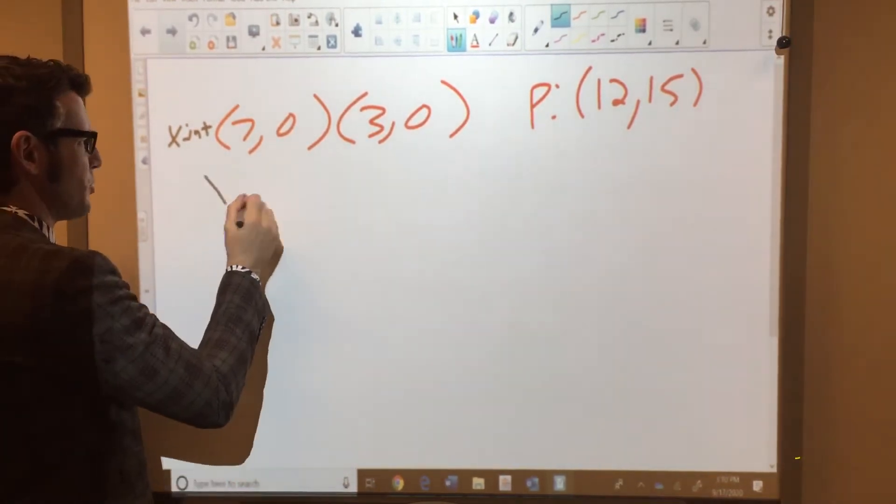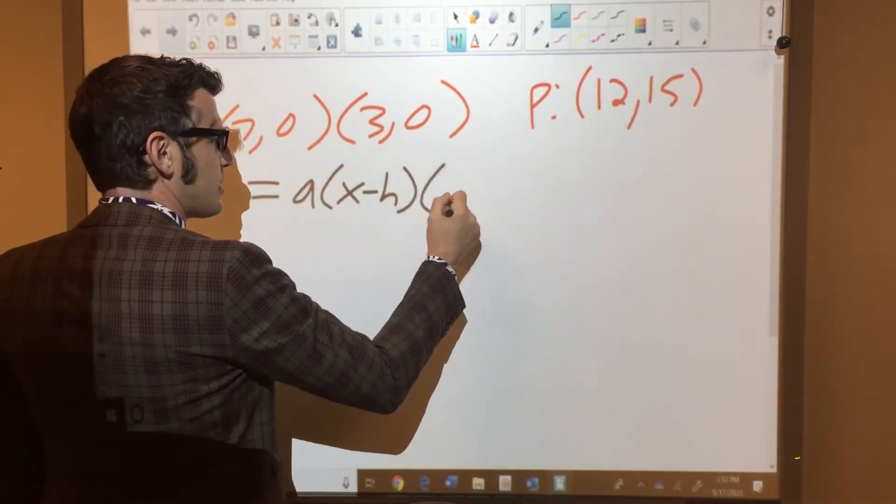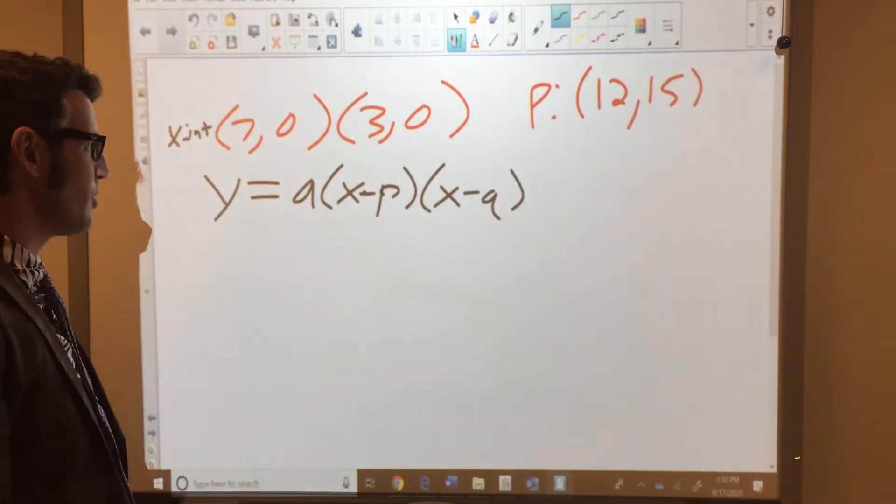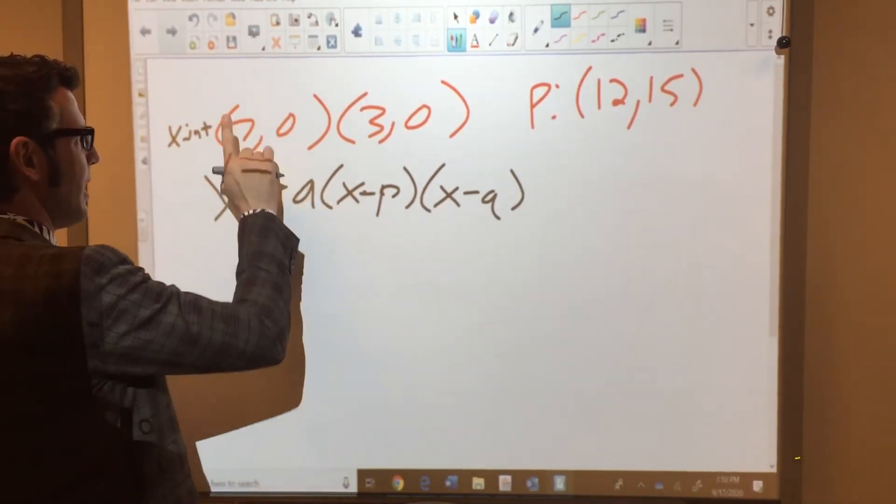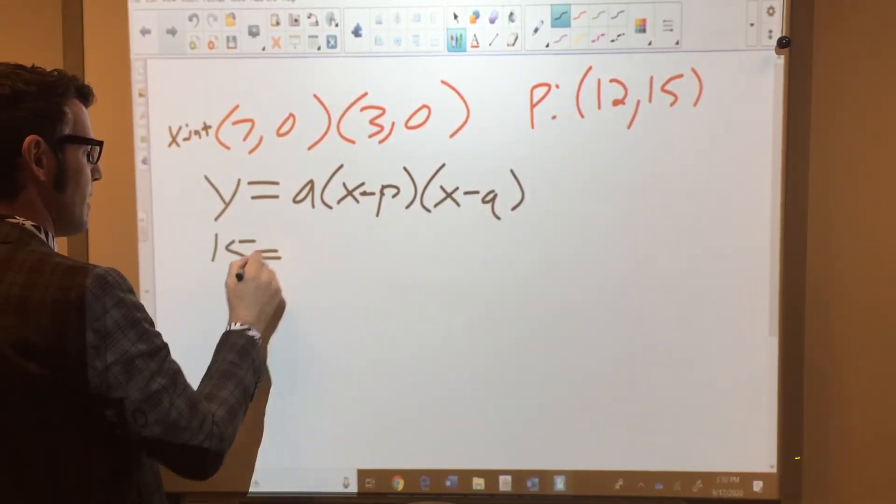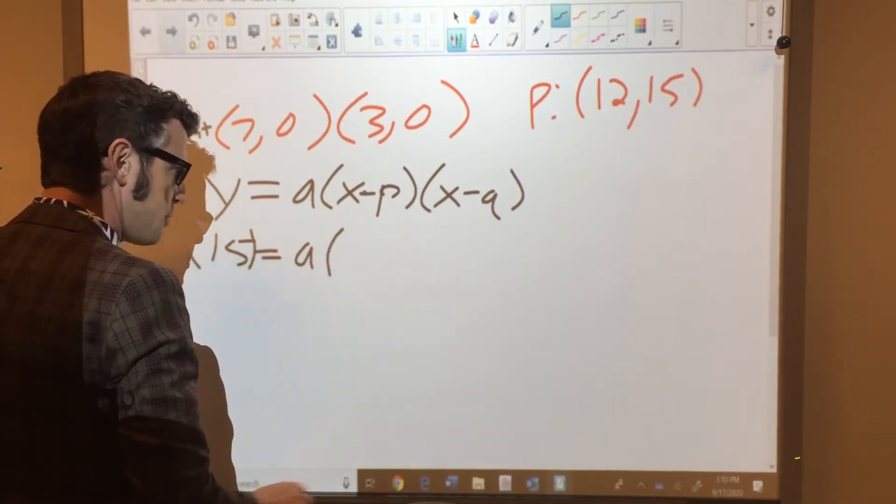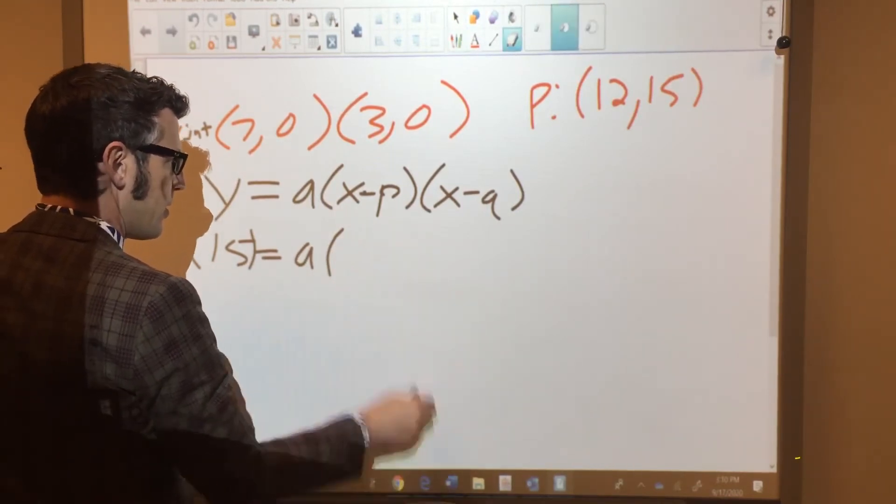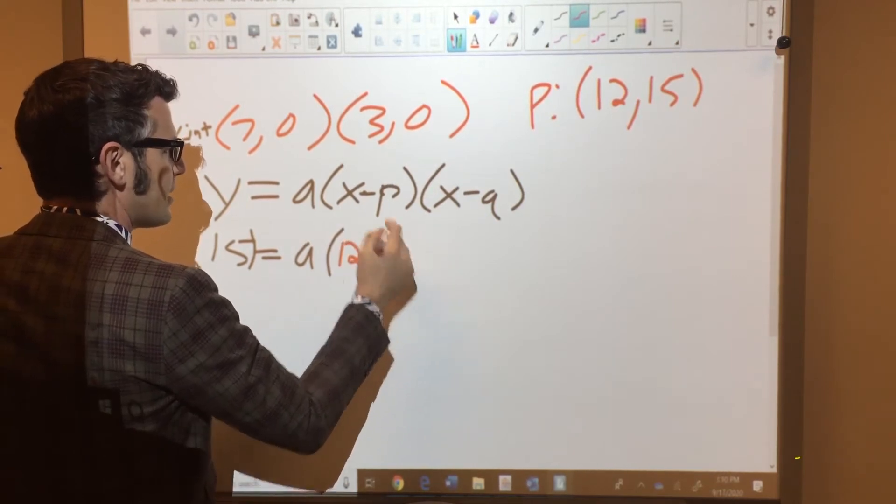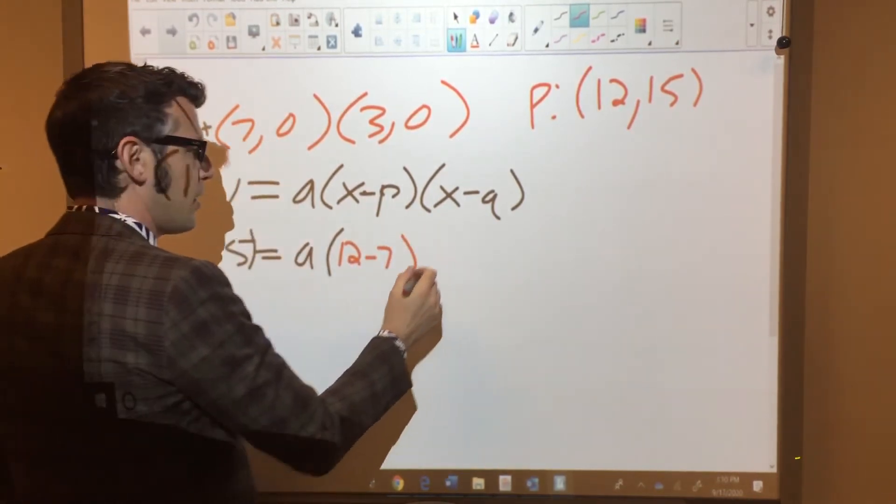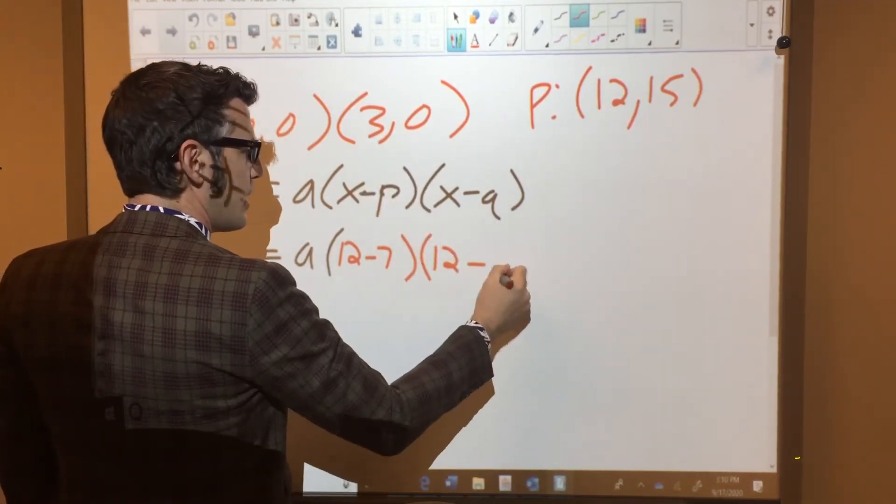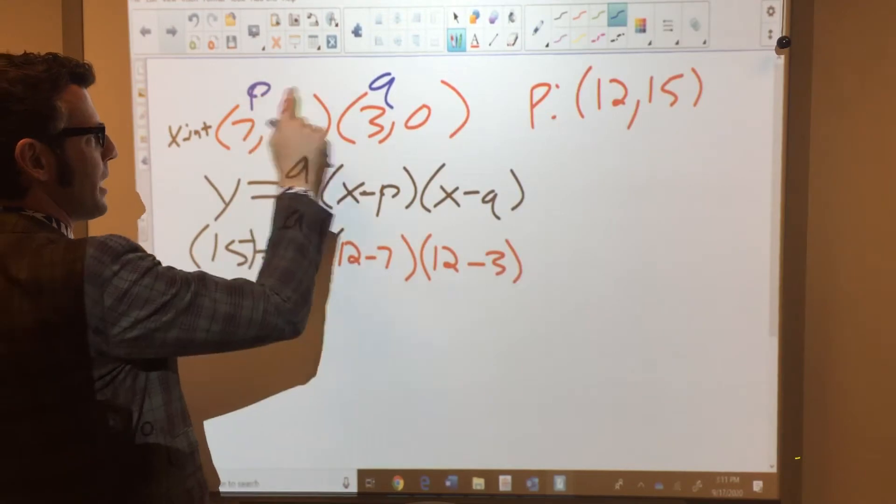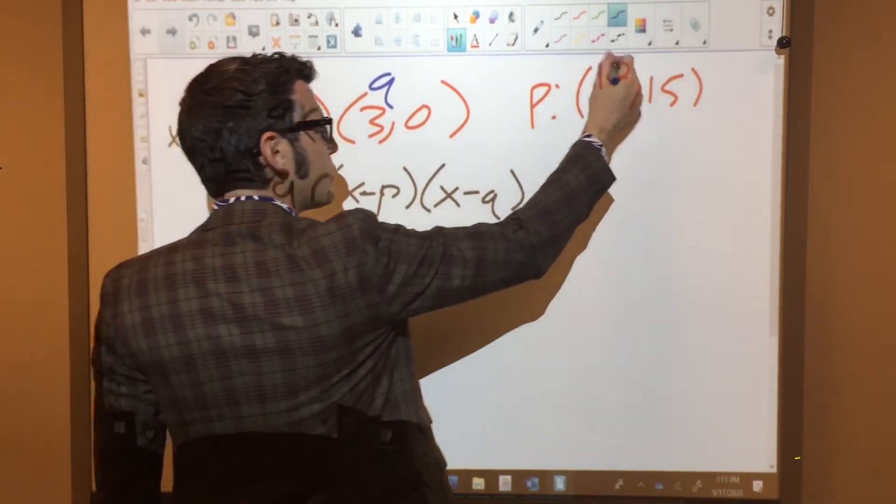I should probably use my x-intercept form, which is y equals a times x minus p, x minus q. Stuck in that vertex form there. So with my intercepts, I plug these in, and I have a coordinate to plug in. So I know 15 equals a. And then inside these parentheses, I have, I know that one of my x-intercepts is 7. My x value is 12 minus 7. That's my coordinate here, or my intercept here. And then 12 minus 3, that's my other intercept. So this is your p, this is your q. It doesn't matter which one's which, but they have to be the number you're subtracting from x. And then this was your x and your y.